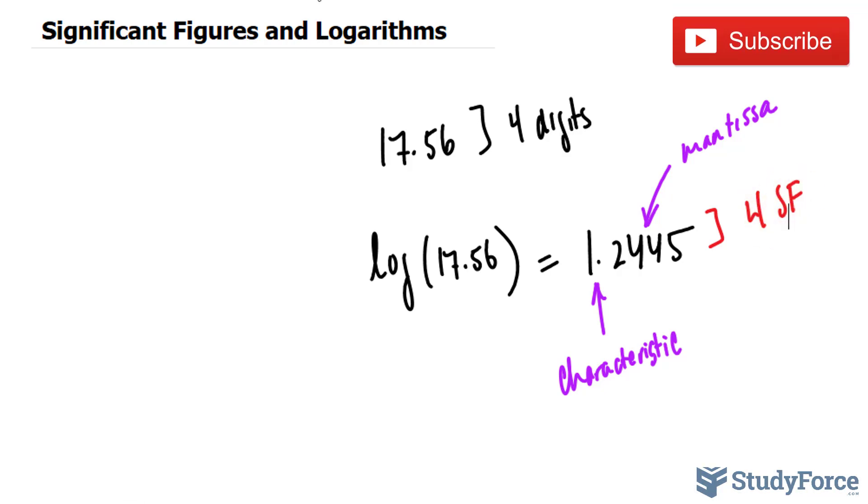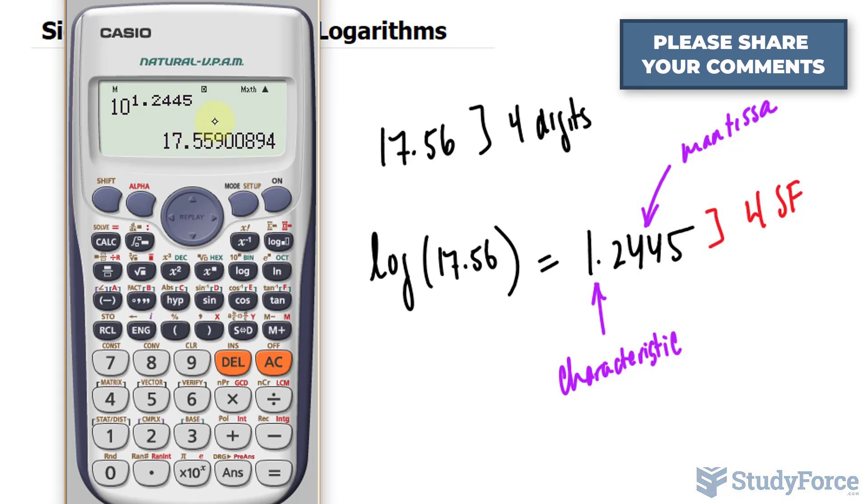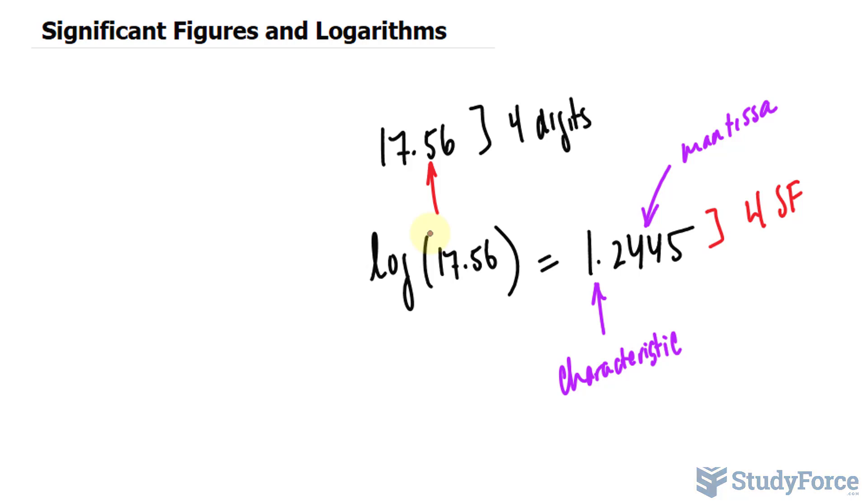So just be cautious of that. Let's say that we took 10 raised to the power of 1.2445. You want to make sure that the output has four significant figures, not five. So we would round it to 17.56, which is what we started with. And there you have it. So that is how to deal with significant figures and logarithms.